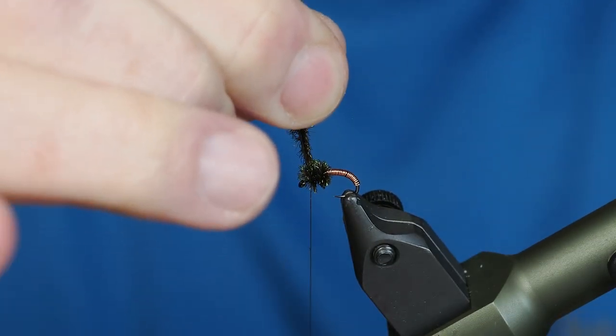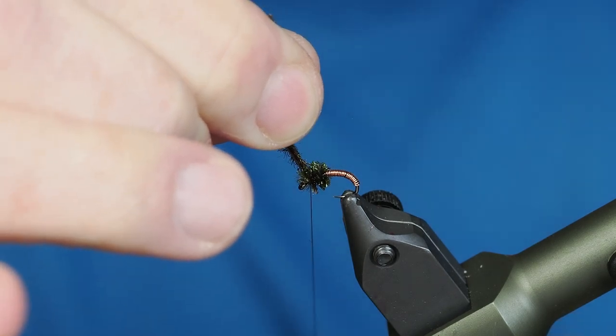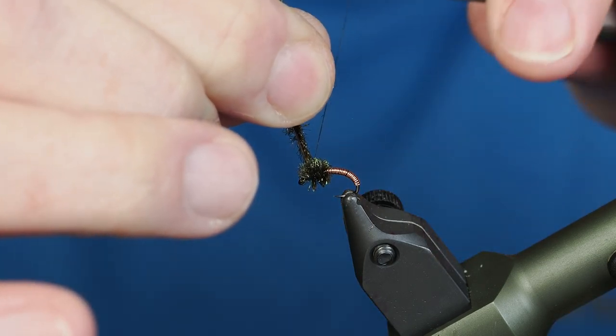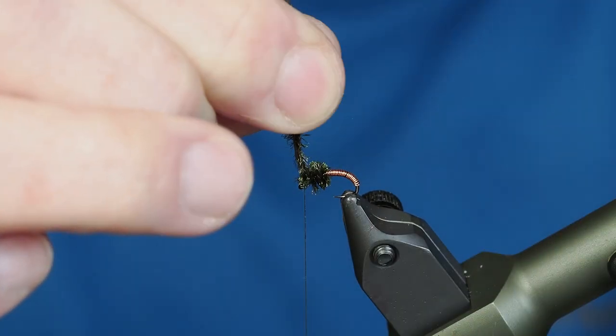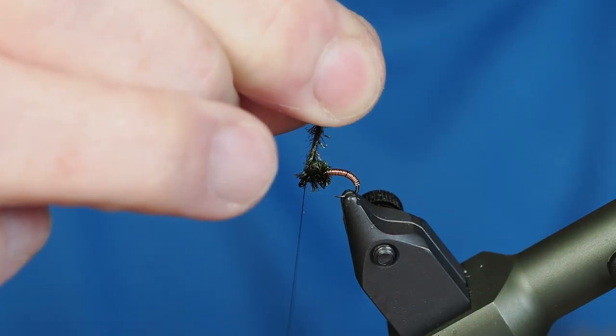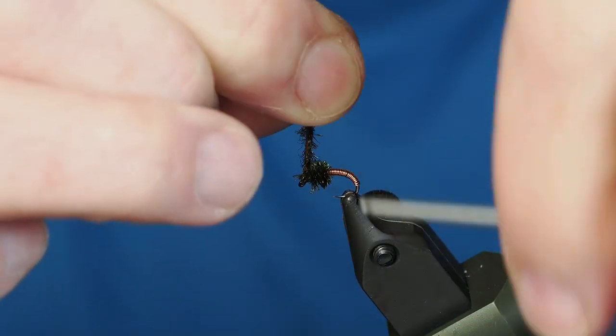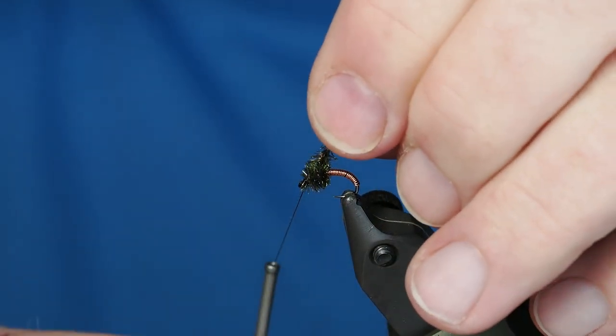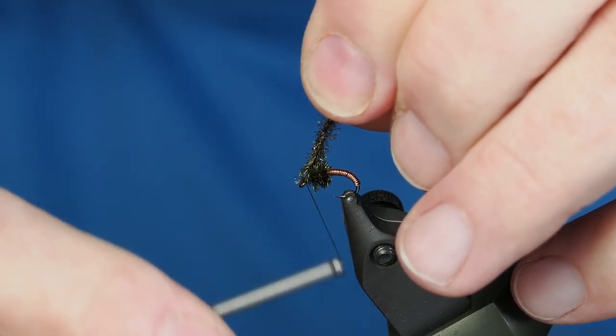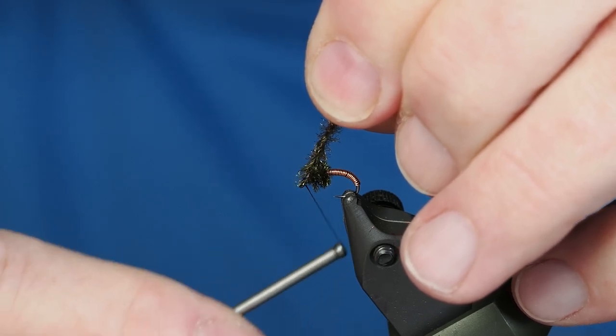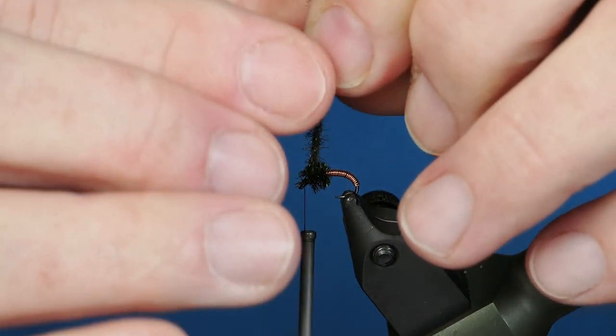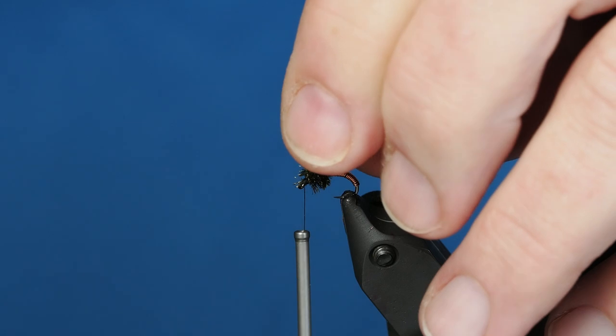Once we get to about there, we're going to go ahead and remove our thread from the cradle and we're going to just go ahead and tie those two peacock herls off. So we've taken a few wraps over the top of that material. I'm going to take a few wraps behind it by the hook eye. From there you can cut these off, or you can break them off if you've tied them in tight enough.